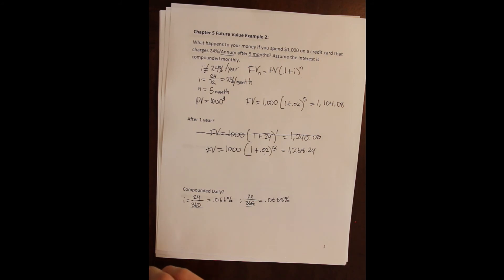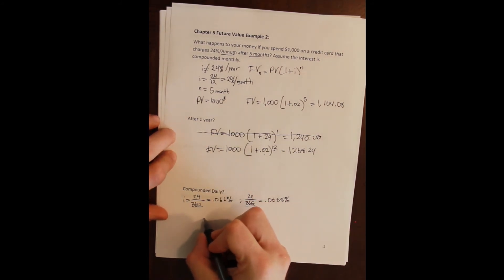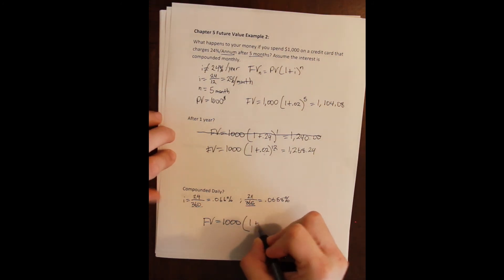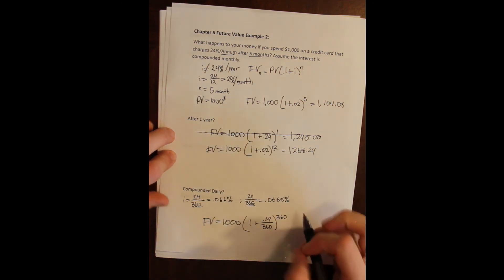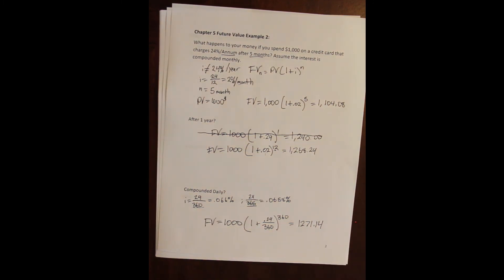But what if we are compounding daily? What's the difference here? So we'll leave our thousand dollars in the account, we're going to leave it in there for one year, but we're going to compound daily. And here just for fun I'll use the 360 day year. So I will compound at a 0.066 percent rate for 360 days and I'll get 1,271.14.